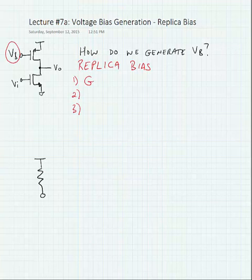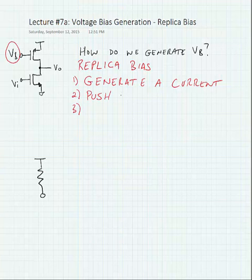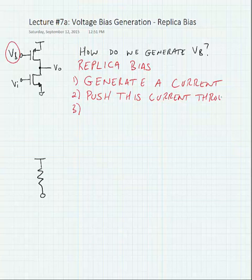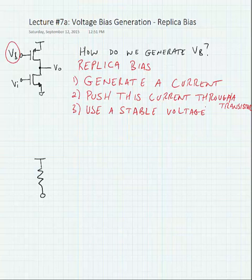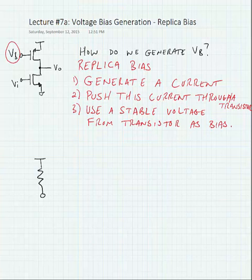What we're going to do with the replica bias is to generate a current. We're going to push this current through a transistor, and we're going to use a stable voltage from the transistor as a bias voltage. Examples of stable voltages are VGS and VBE for a MOSFET and a bipolar transistor respectively.